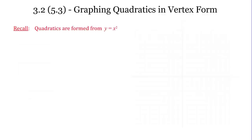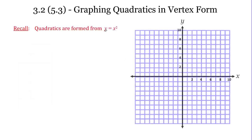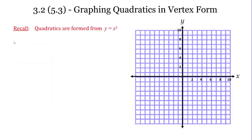Alright, 3.2, which is section 5.3 of our textbook: graphing quadratics in vertex form. There's a little recall here that quadratics are formed from y equals x squared. We haven't really done any graphing of quadratics, so let's take a look at our first graph of the quadratic y equals x squared.